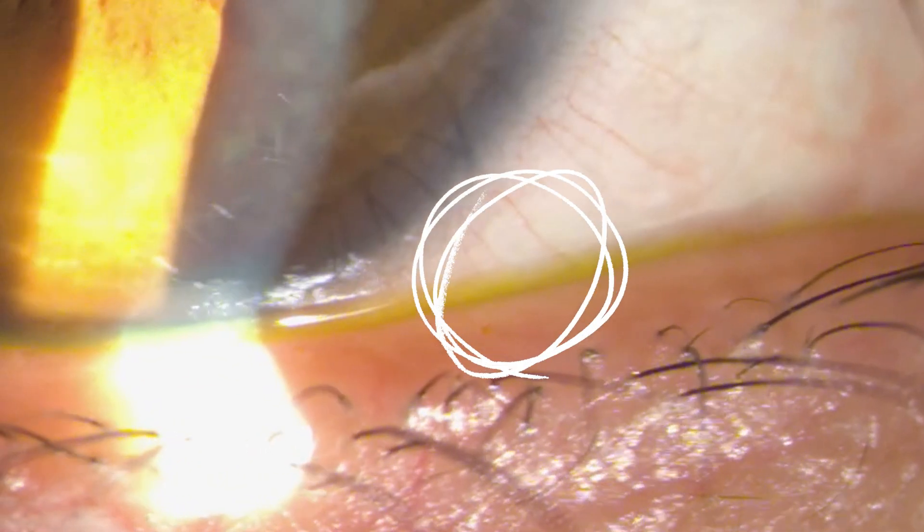So the patient has had fluorescein and stain into the eye, and that's why you can see a little bit of a yellow hint of the tear film.